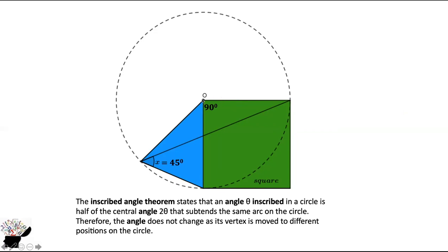Why? Because from here, we can see that this line is the radius. This line is also the radius. And this is the inscribed arc angle. So any angle on the circumference is half the angle at the center.